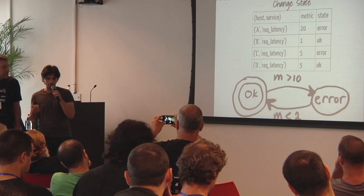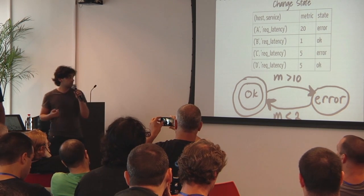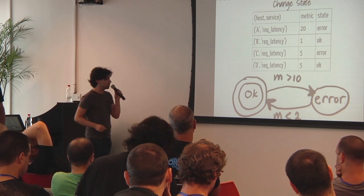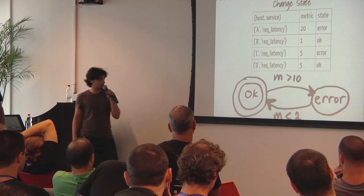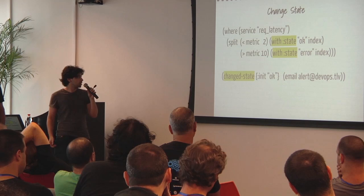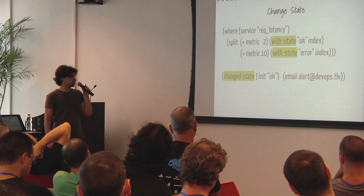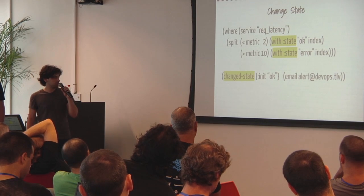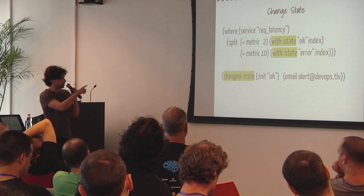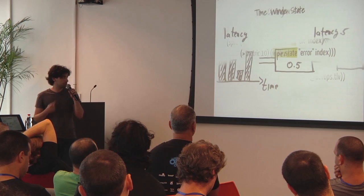This actually causes a bunch of emails to be sent to your inbox and pollute it. You can simply resolve this by having Riemann react just to state changes. We define that when a metric is bigger than 10, the state is error, and when it's less than two, the state is okay. When the service is request latency and the metric is bigger than 10, we change the state to error with the 'with' function, and then when the state changes from okay to error, we just send one email.